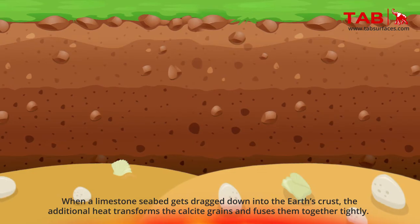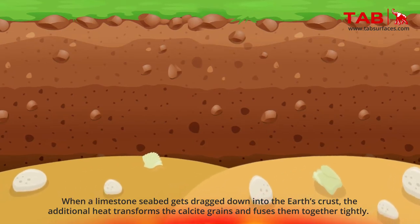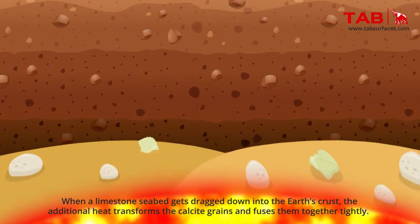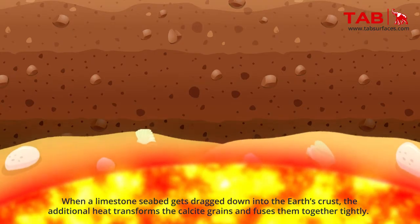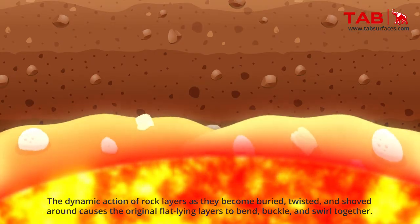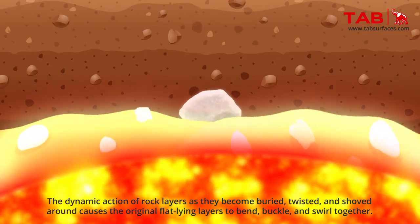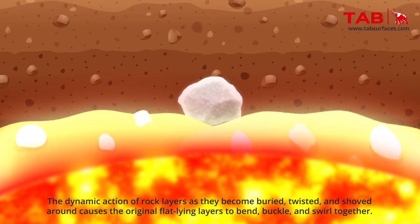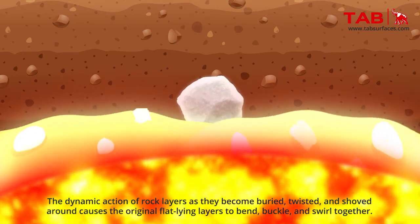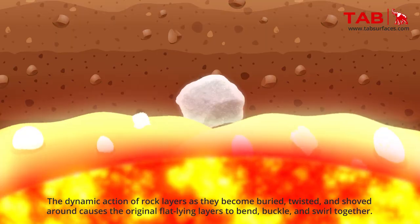When a limestone seabed gets dragged down into the earth's crust, the additional heat transforms the calcite grains and fuses them together tightly. The dynamic action of rock layers, as they become buried, twisted and shoved around, causes the original flat-lying layers to bend, buckle and swirl together.